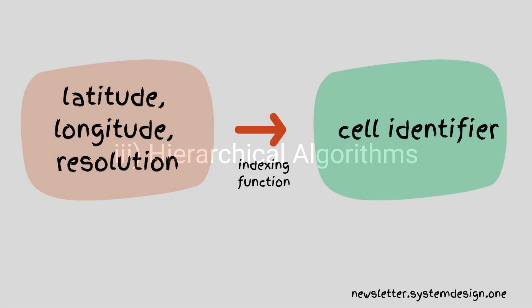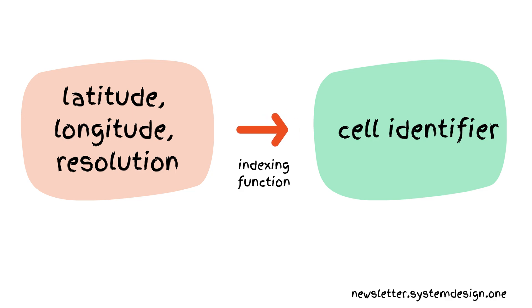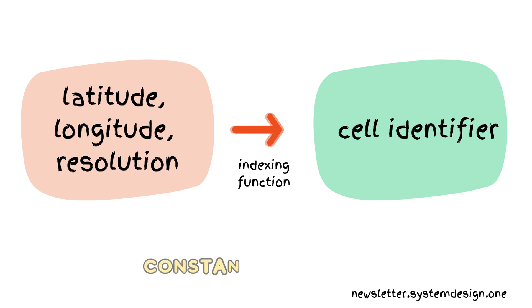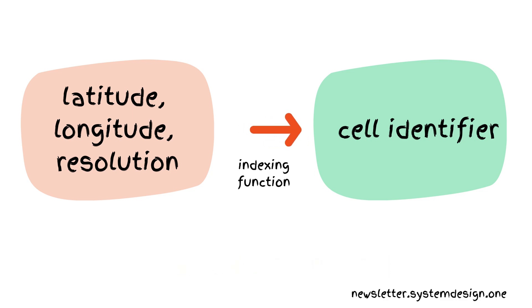H3 supports the indexing function to find a cell in the grid efficiently. It accepts latitude, longitude, and resolution to return the cell identifier. H3 finds the neighboring cells around a specific cell using the K-ring function, because H3 does constant-time bitwise operations to truncate the cell index, making switching between data resolutions easy.